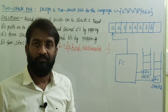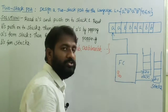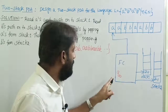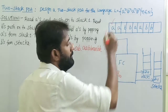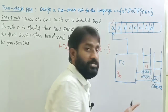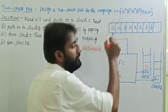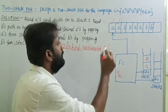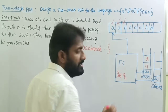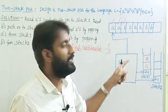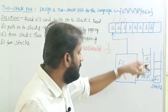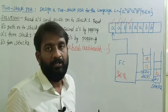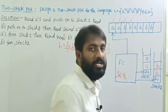Let me tell you the logic. Assume the initial state is q0, the initial symbol in stack one is z0, and the initial symbol in stack two is z1. On state q0, first read 'a' and push 'a' onto stack one without doing any operation on stack two. Then read the next 'a' and push 'a' onto stack one without doing any operation on stack two. Then read 'b', changing state from q0 to q1, and push 'b' onto stack two without doing any operation on stack one. Read the next 'b' and push 'b' onto stack two without doing any operation on stack one.